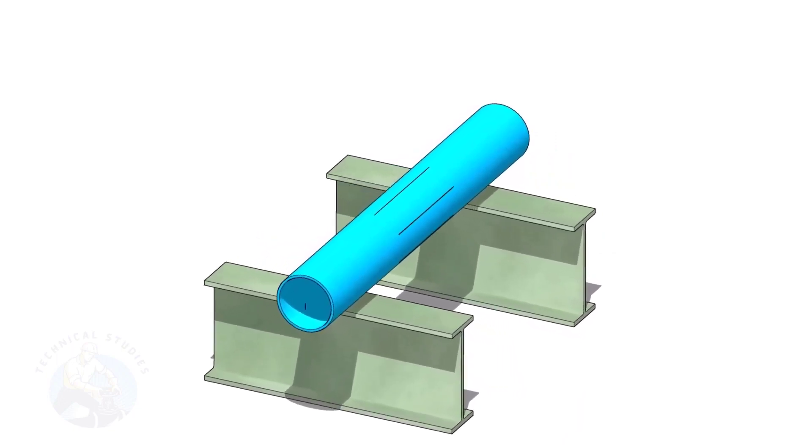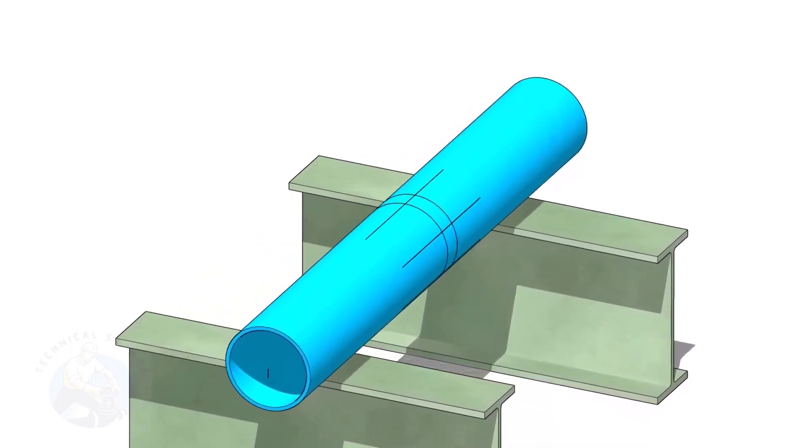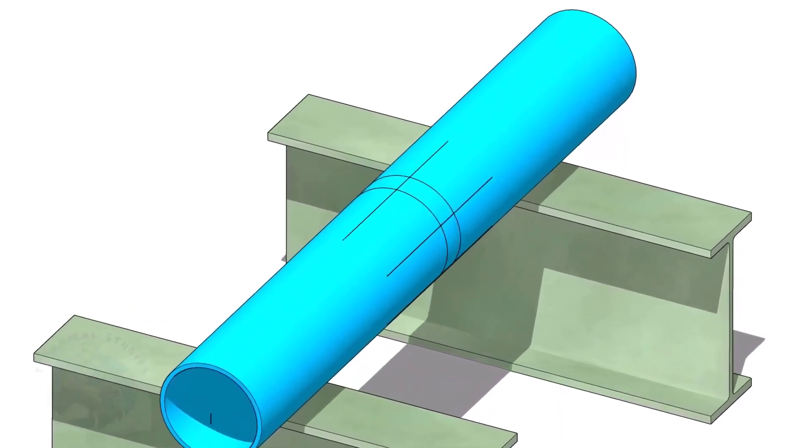Put a 6-inch pipe on supports. Divide the pipe into six equal parts and draw lines as shown.